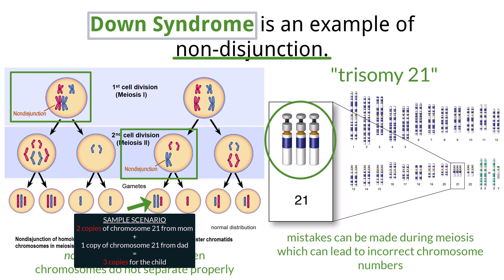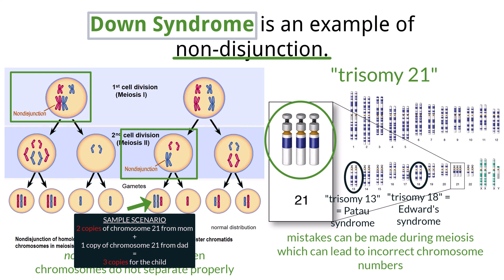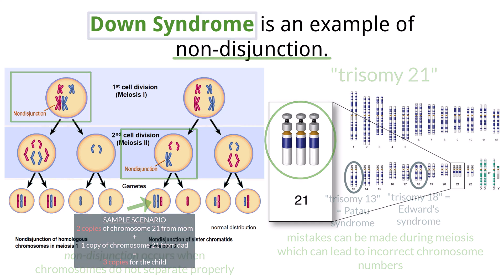Nondisjunction can occur in other chromosomes as well. Three chromosomes of 18 is called Edwards syndrome, and three chromosomes of 13 is called Patau syndrome. Trisomy of other chromosomes are usually not viable and are a frequent cause of miscarriage.